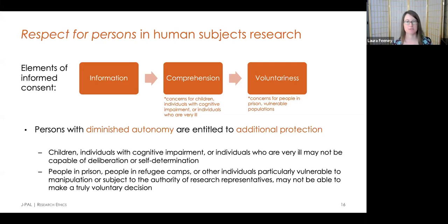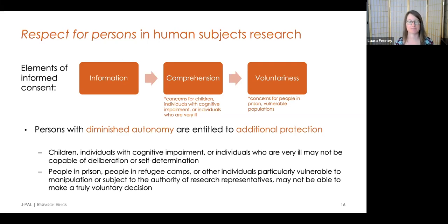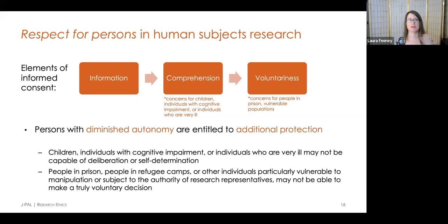Other challenges in the informed consent process involve the fact that not everyone is capable of deliberation or self-determination — this can be due to age, a medical condition, a temporary circumstance, or some other reason. These people are entitled to additional protections and consideration. Examples include children, people with cognitive impairments, or people in very high-stress situations who may not be able to comprehend or deliberate on all necessary information. When working with children, we'll typically seek assent from the child and a more full consent from their caregiver, who has the capacity to actually comprehend the information, weigh the risks and benefits, and make a decision on that child's behalf.